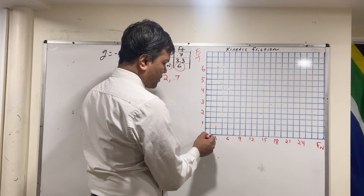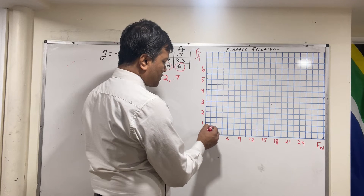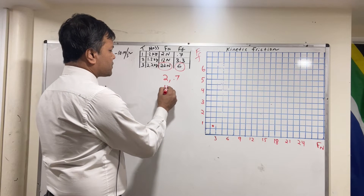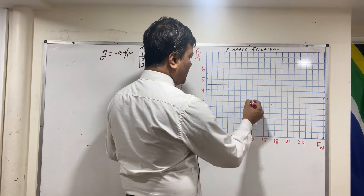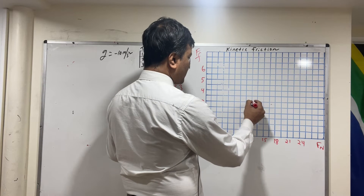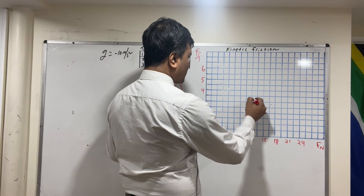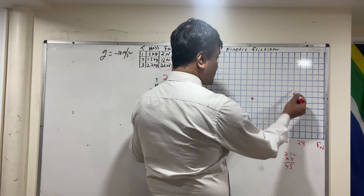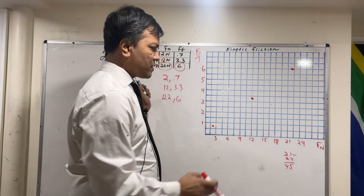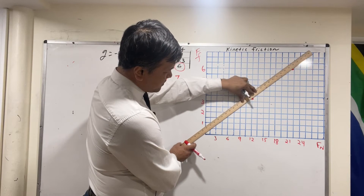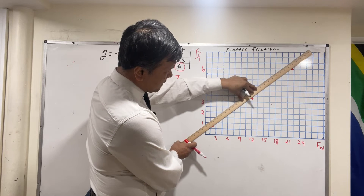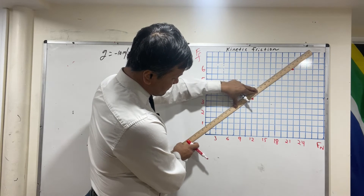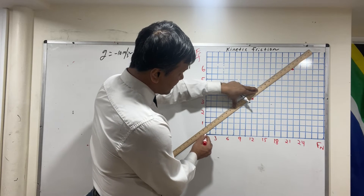Our first point is (2, 0.7) — that's F_n = 2, F_f = 0.7 — which lands right about here. The second point is (12, 3.3), plotted at 12 on the x-axis and just below 3.5 on the y-axis. The third point is (22, 6). Now we connect the dots — it seems we can connect all points without any problem — and draw the best-fit line.